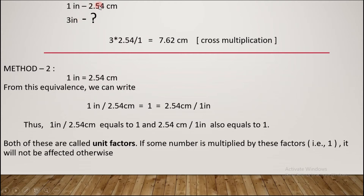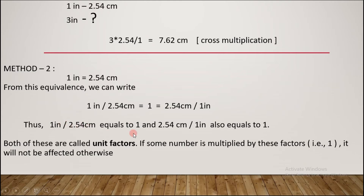That gives us 7.62 centimeters. So this is the cross-multiplication method — 3 × 2.54 ÷ 1. This is the textbook method and it is easy to calculate, but we also want to learn the unit factor method.